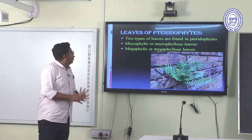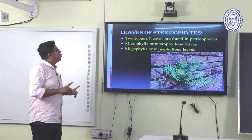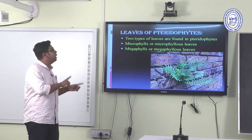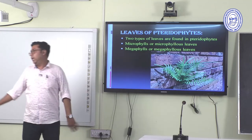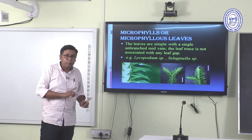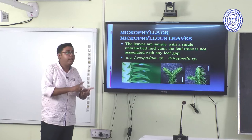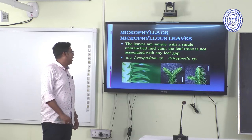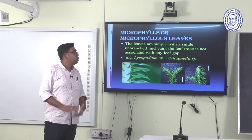Two types of leaves are found in Pteridophytes: microphyllous leaves and megaphyllous leaves. Microphyllous leaves are simple with a single unbranched mid-vein, and the leaf trace is not associated with any leaf gap. Examples include Lycopodium and Selaginella.